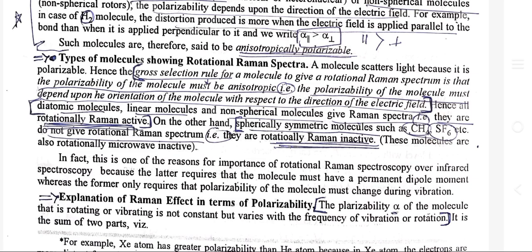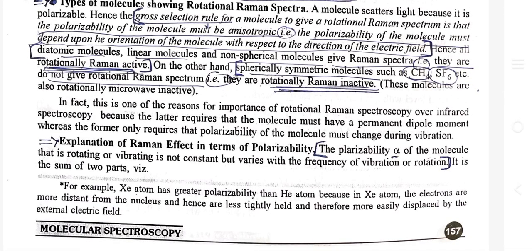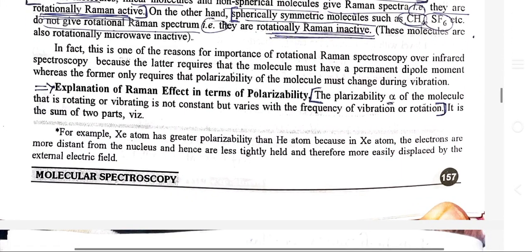Types of molecules showing rotational Raman spectra: a molecule scatters light because it is polarizable. Hence the gross selection rule for a molecule to give a rotational Raman spectrum is that the polarizability of the molecule must be anisotropic — that is, it must depend upon the orientation of the molecule with respect to the direction of the electric field. Hence all diatomic molecules, linear molecules, and non-spherical molecules give Raman spectra and are rotationally Raman active. Spherically symmetric molecules such as CH₄ and SF₆ do not give rotational Raman spectra and are rotationally Raman inactive. This is one reason for the importance of rotational Raman spectroscopy over infrared spectroscopy, because the latter requires the molecule to have a permanent dipole moment, whereas the former only requires that the polarizability of the molecule must change during vibration.